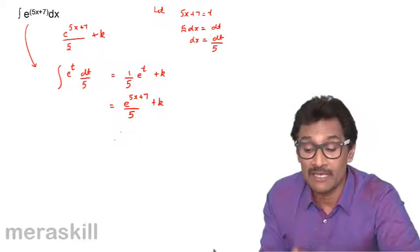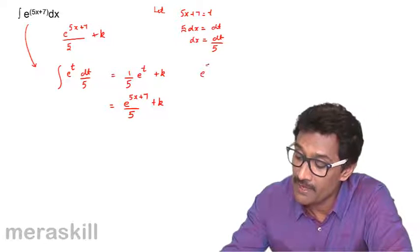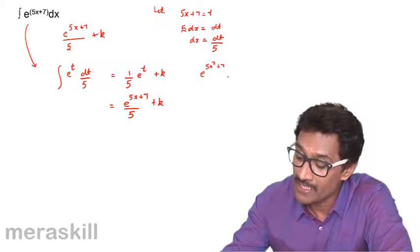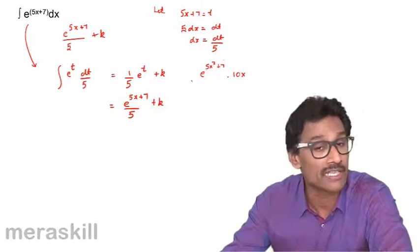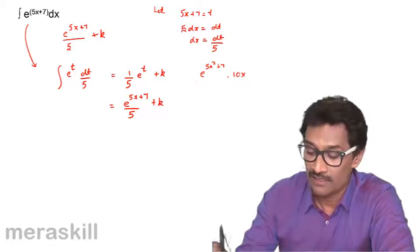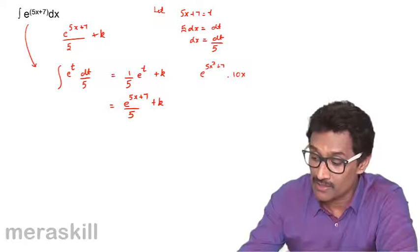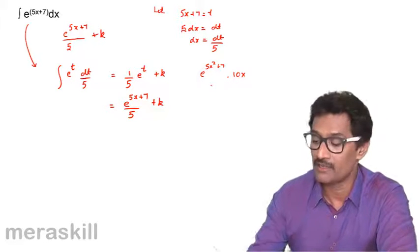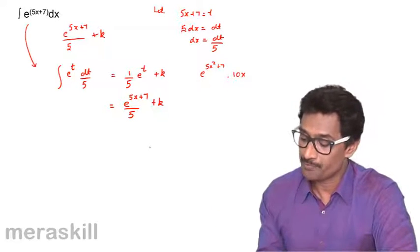Remember, in the previous case with e^(5x² + 7), there must be a 10x present for the method to work directly. We cannot use the linear formula because 5x² + 7 is not a linear function of x — it is a quadratic function of x.